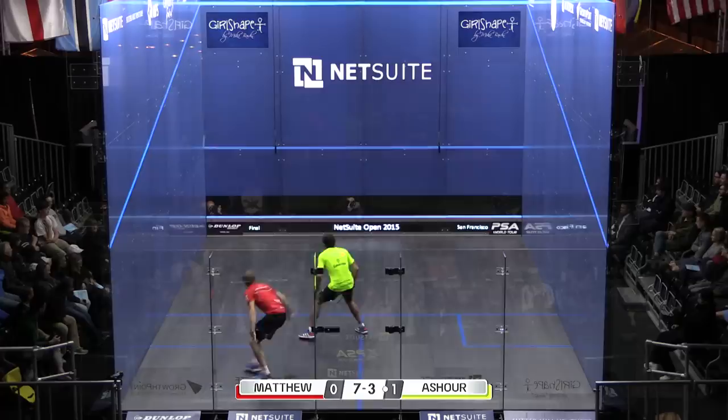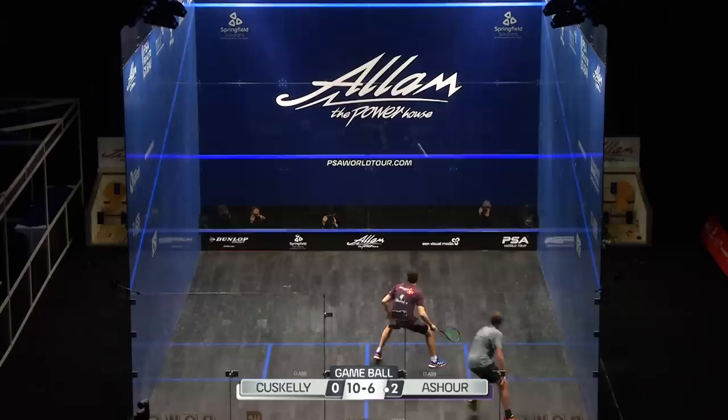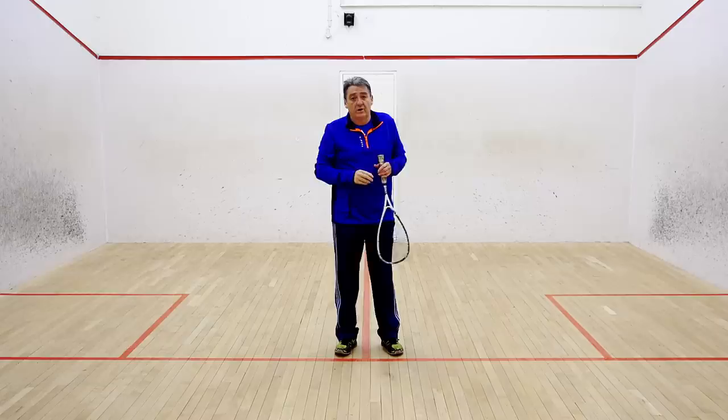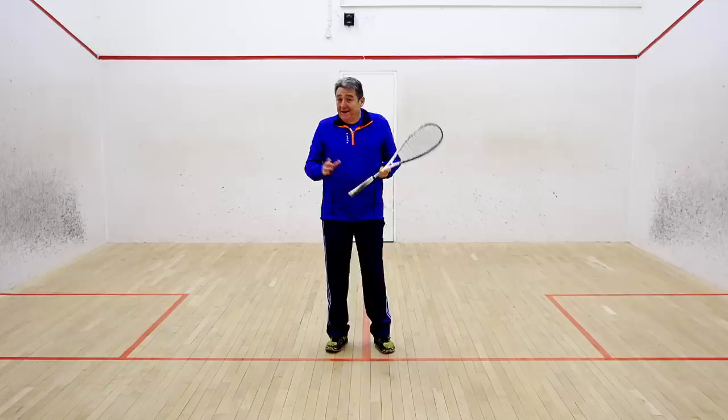If you start hitting cross courts too much, it gives your opponent — the shot player — angles to play all these lovely shots. Keep the ball straight and they then really have to be skillful to play their short game. So keeping the ball straight is a very, very important part of negating a shot player.